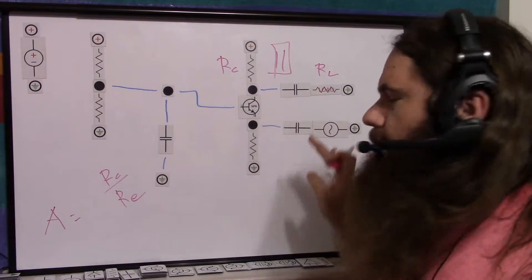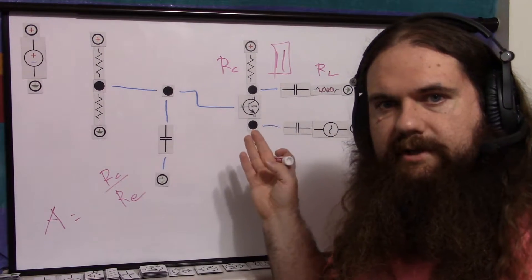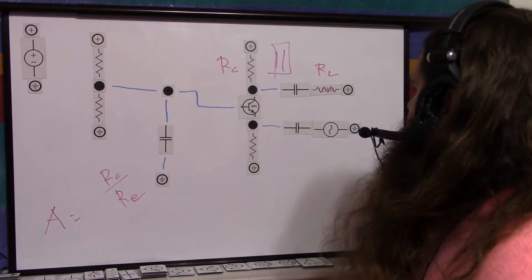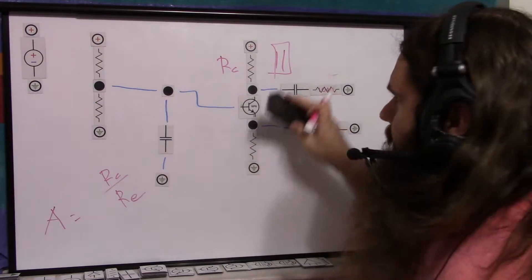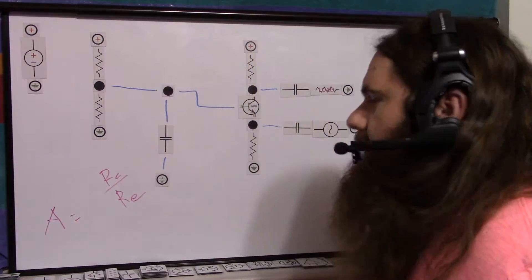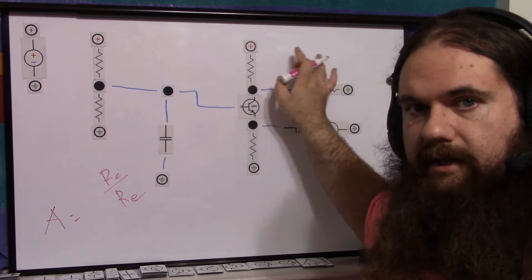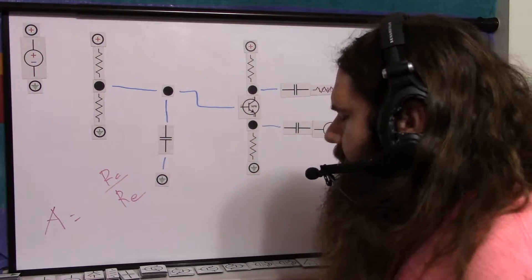But you really don't need that big of a load. I've been using 10k ohm resistors for the load, and it seems to work just fine. I will get more into parts picking in the next video after I show you the numbers on the simulator. Right now, I'm just going over how the circuit works. But keep in mind that RC and RL here are in parallel.